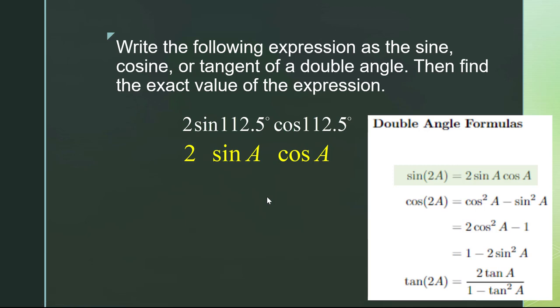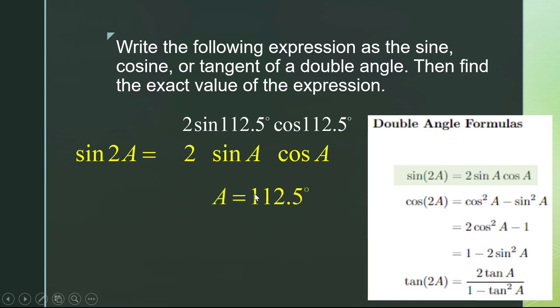When we look at 2 sine(a) cosine(a), we see that we have exactly that, and that means it would be equal to sine of 2a. So what is a? Looking at our pattern, a aligns with 112.5 degrees. So a is 112.5 degrees, and now we're going to plug it into the formula.